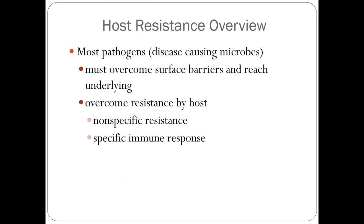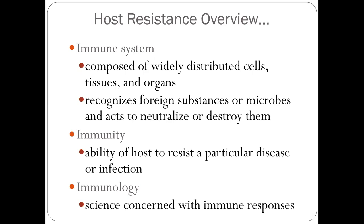Host resistance overview: most pathogens causing disease will overcome the surface barrier and reach underlying tissues. The surface barrier is usually a physical barrier. Then they will overcome resistance by host cells — that could be non-specific resistance, which we call a universal defense system, or it could be a specific immune response related to B-cells and T-cells.